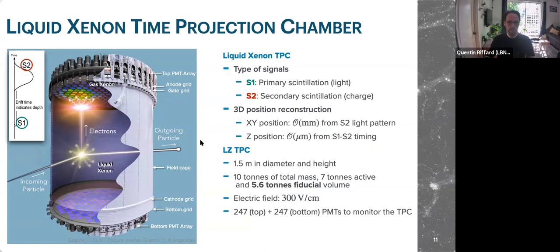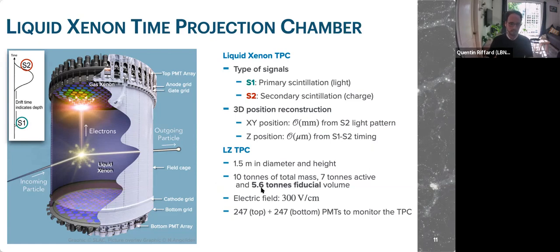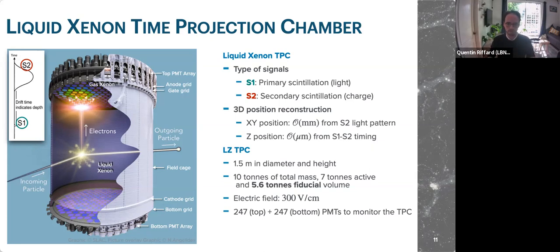The LZ TPC is about 1.5 meters high and in diameter. In total, we have 10 tons of liquid xenon, with 7 tons in the active volume. After fiducialization — removing the edges to eliminate background — we reach a fiducial volume of 5.6 tons, which is the volume that matters for the analysis. The target electric field is about 300 V/cm. Light is collected by top and bottom arrays, each composed of 247 PMTs.